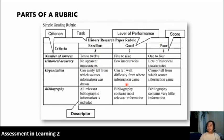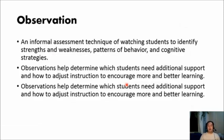Our main focus now is other scoring instruments for performance assessment that teachers can use to rate or assess students when performing authentic tasks. The first one is observation. Observation is an informal assessment technique of watching students to identify their strengths, weaknesses, patterns of behavior, and cognitive strategy. Observation helps us determine which students need additional support and how to adjust instruction to encourage more and better learning. The purpose of assessment is really to improve the teaching and learning process.